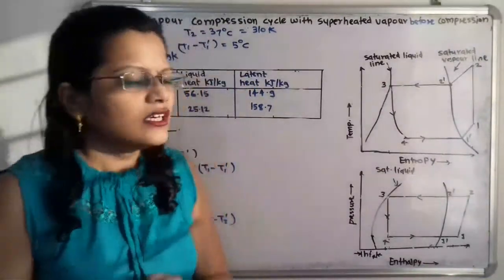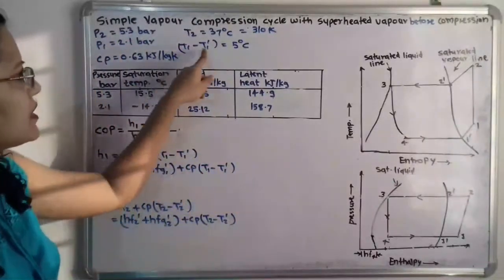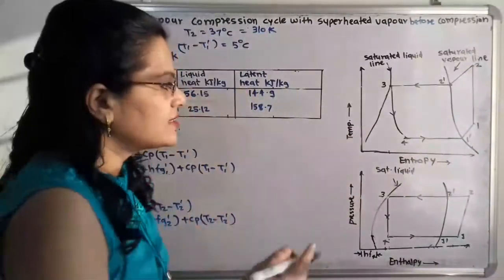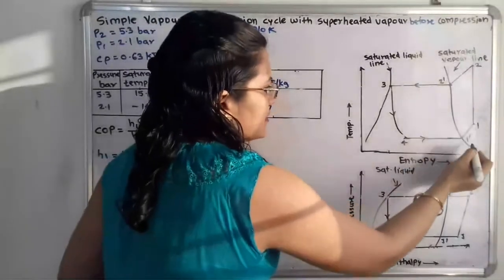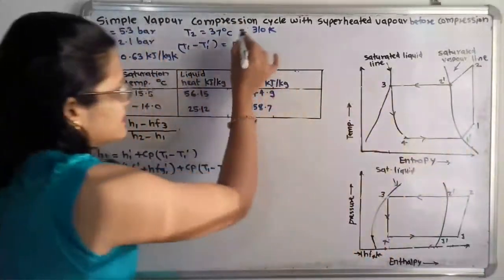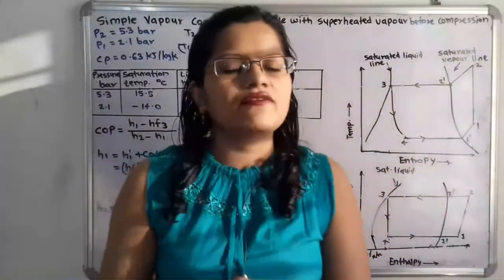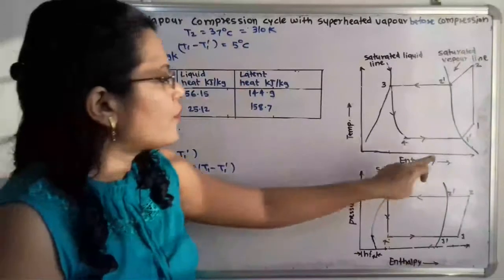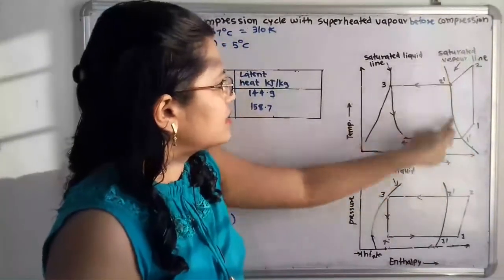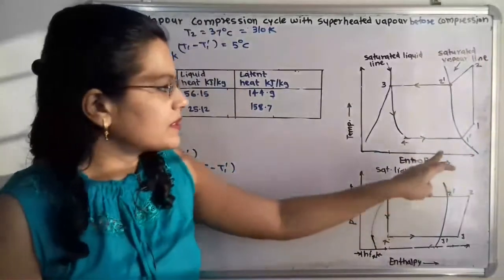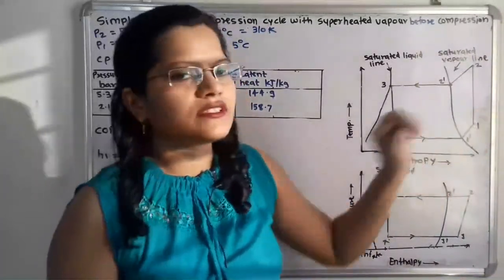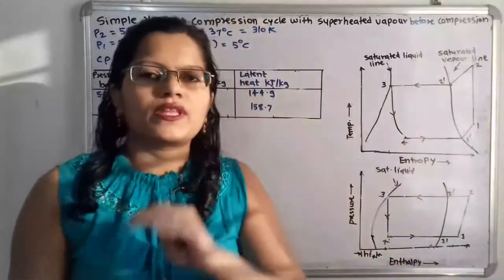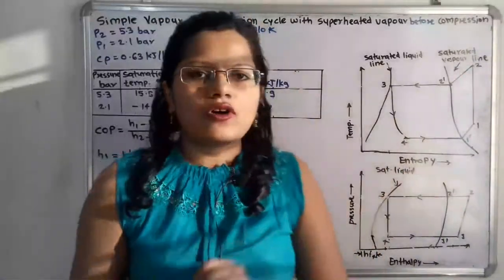Before compression, the steam is also getting superheated, so t1 minus t1-dash = 5°C. Point 1-dash is on the saturated vapor line, and after superheating the temperature and entropy increase, moving to point 1. The process 1 to 2 is the compression process, taking place at constant entropy.